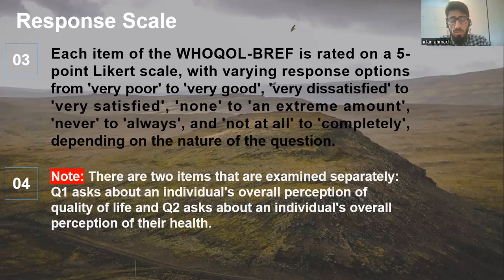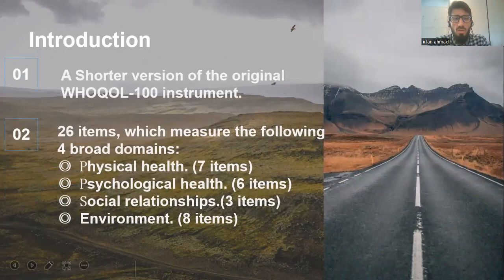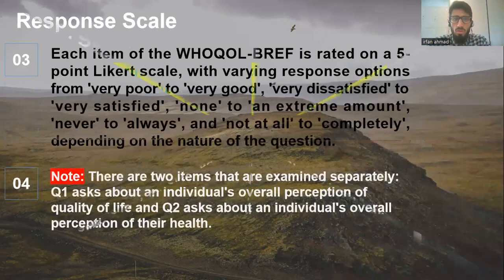There is a small note for you people when you are using the WHO quality of life, you have to keep in mind, there is two items that are examined separately, like question number one and question number two. They are examined separately from all the 24 items. From the 26 items, you have to actually discover 24 items like physical, psychological, social, environmental. The other two questions, they are scored separately.